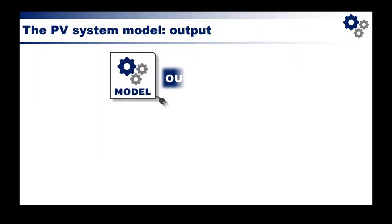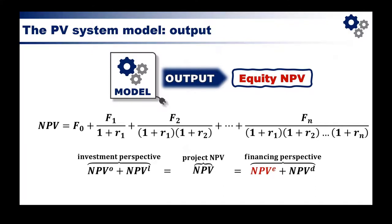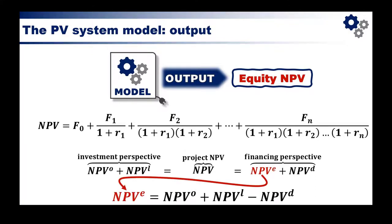Il modello calcola l'utile netto dagli input operativi, e il VAN (valore attuale netto) viene visto sotto due prospettive: il VAN di progetto, che include le aree operative e della liquidità, e la prospettiva del finanziamento, che include debito e patrimonio. Il mandato del manager è tipicamente quello di incrementare la ricchezza degli azionisti, quindi ci focalizziamo naturalmente sul VAN equity.